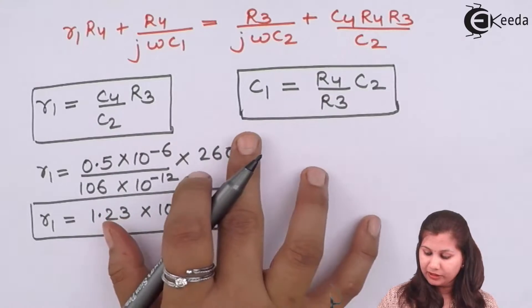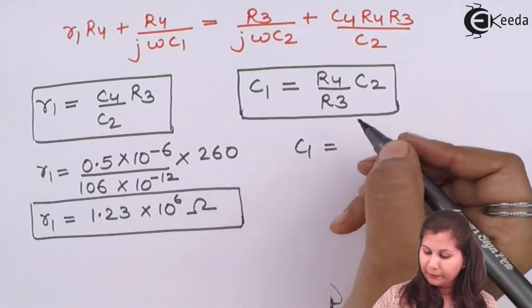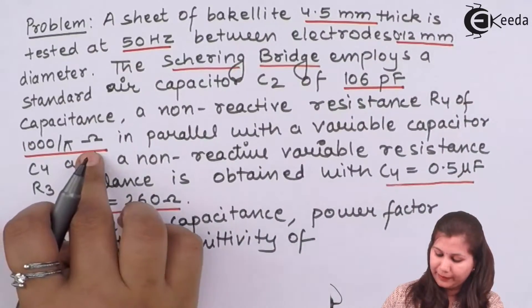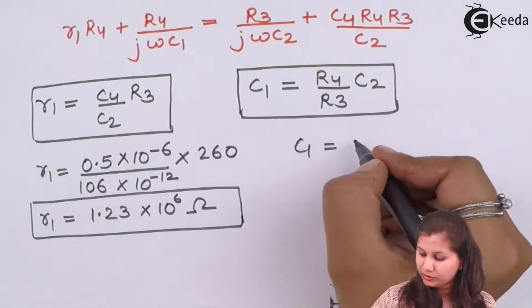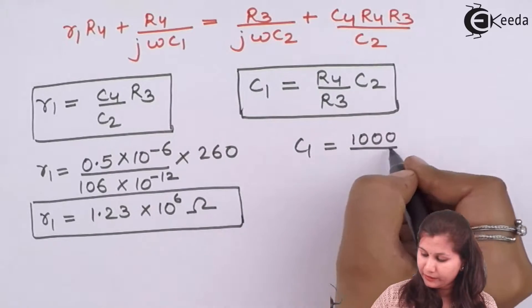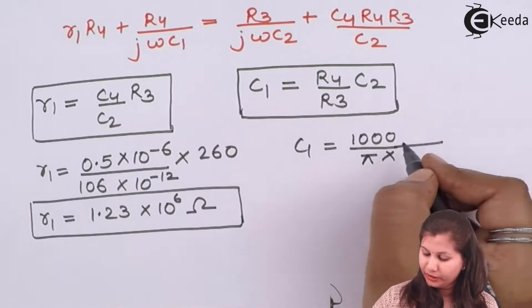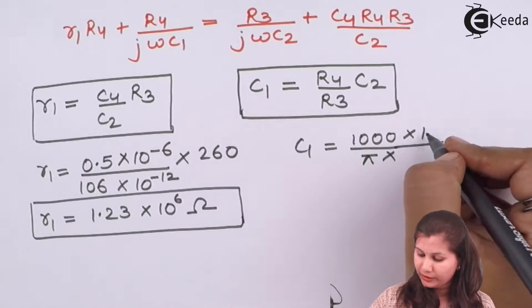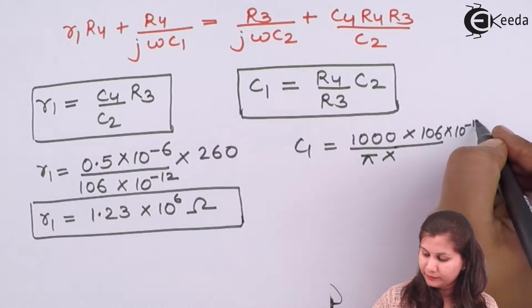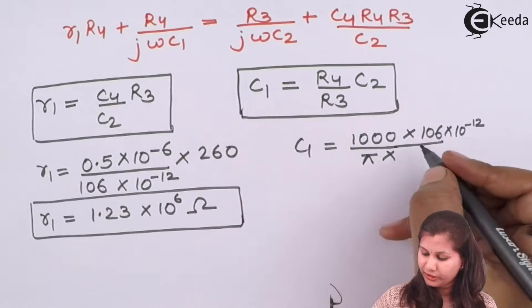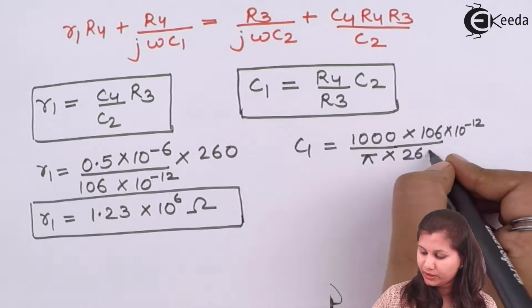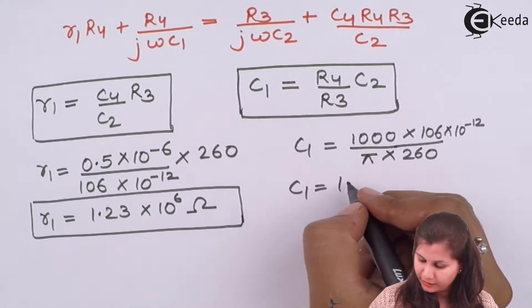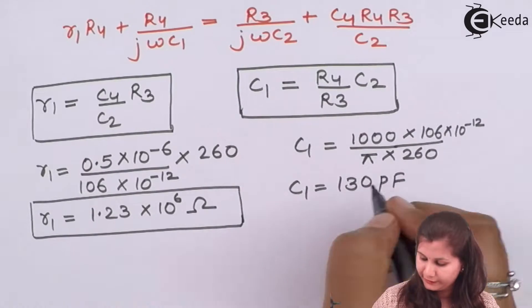Now calculating C1: using R4 = 1000/π and R3 = 260 ohms, with C2 = 106 picofarads, we get C1 = (R4/R3)·C2 = 130 picofarads.